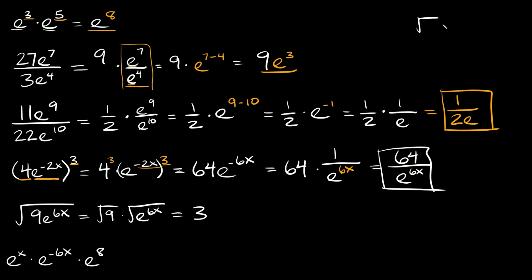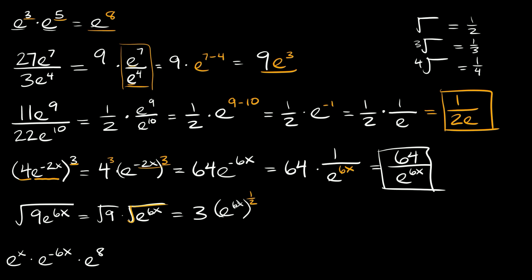Whenever you take the square root of a number it's the same thing as raising that number to the one-half power. If you take the cube root of a number, it's the same as raising it to the one-third power. If you have the fourth root, it's the same as raising it to the one-fourth power, and so on. So here we can rewrite this as e to the 6x all raised to the one-half power, because we're taking the square root. We have a power raised to another power, so we multiply: 6 times one-half equals 3. So this is all equal to 3 times e raised to the 3x — that's our answer.